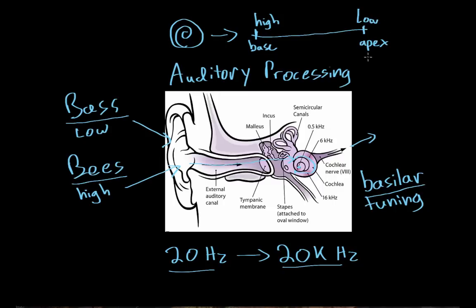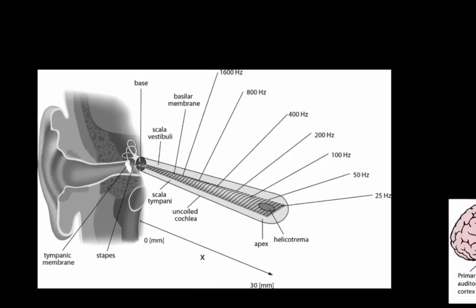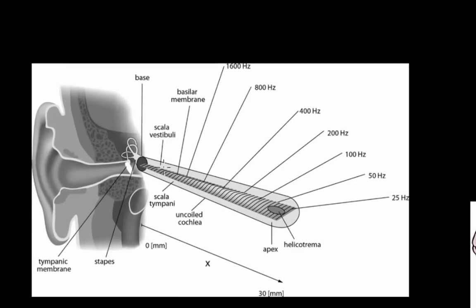This picture basically just shows the cochlea unrolled. This would be the base of the cochlea, and this would be the very tip or the apex of the cochlea. Hair cells are found all along the basilar membrane — this membrane right here — and there are a whole bunch of these hair cells. Hair cells closer to the very base respond to a very high frequency, around 1600 Hertz, and hair cells closer to the apex respond to a lower frequency, around 25 Hertz. So this lower end would be something like a bass drum, and the high frequency end would be something like bee wings flapping in the air.